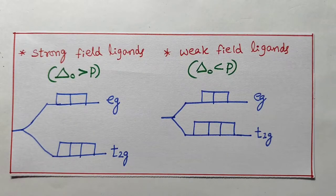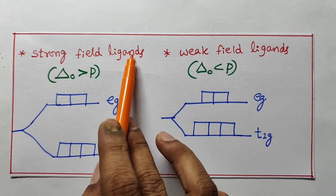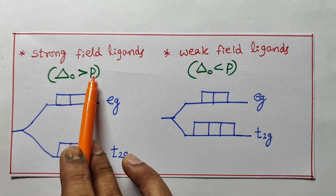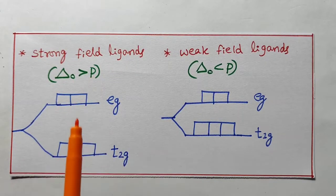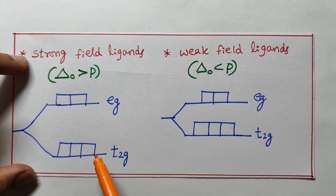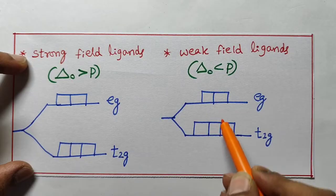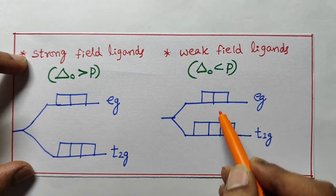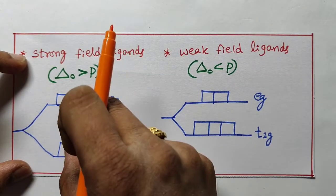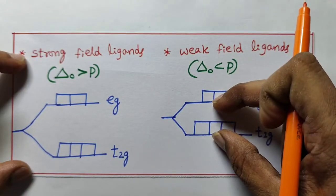Here is the important point. In presence of strong field ligands, delta O is greater than pairing energy, so the energy difference is more. In presence of weak field ligands, the energy difference is very less. Here energy difference is more, here energy difference is less.